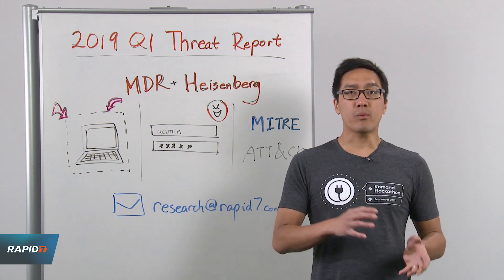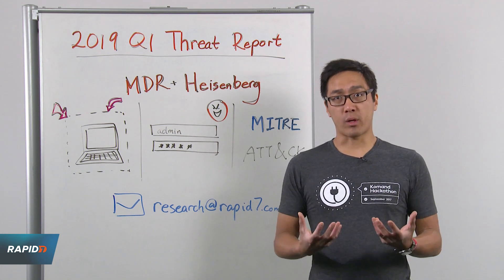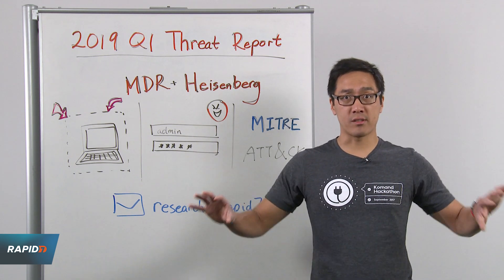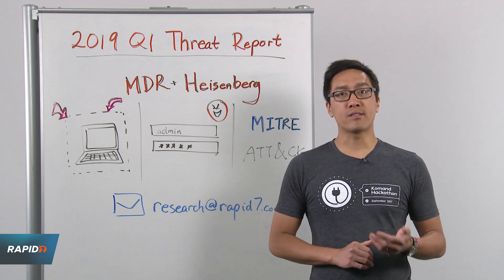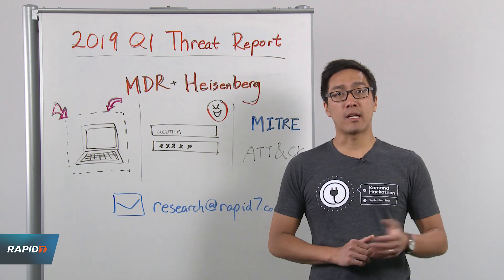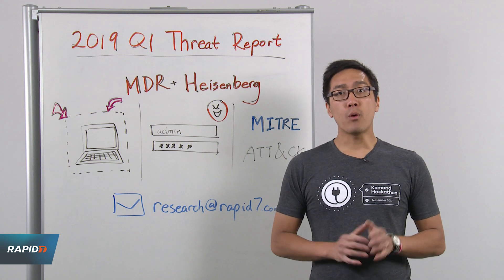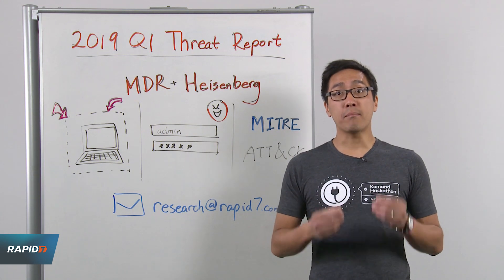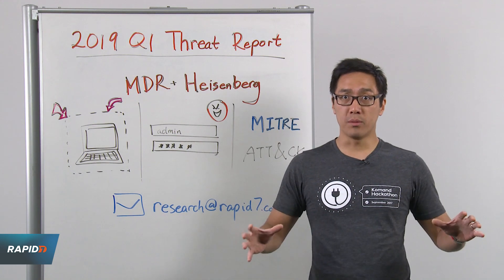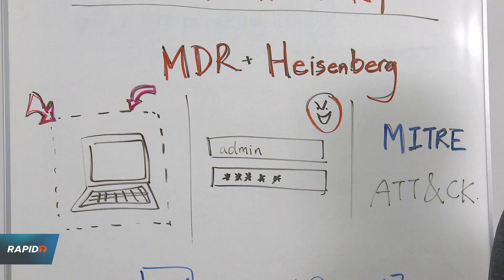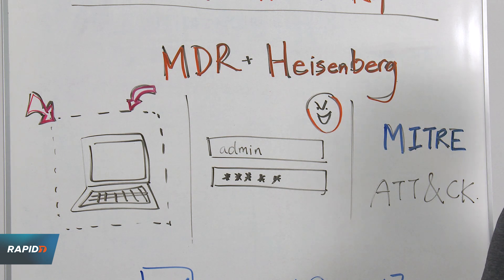When we transform the data to look at large organizations and small organizations separately — where we define large as organizations with a thousand or more monitored assets — remote entry again remains the most common threat type for large organizations during the quarter as a whole. The story is somewhat different for small organizations, where threat movement is the most prevalent threat type, though remote entry is not far behind.